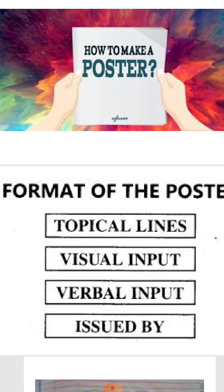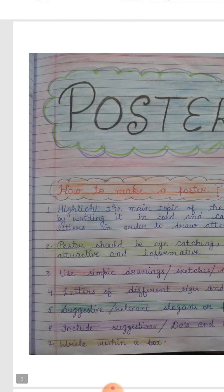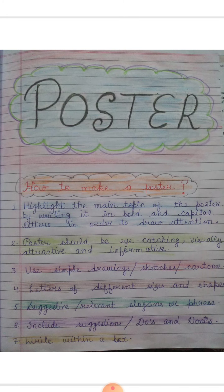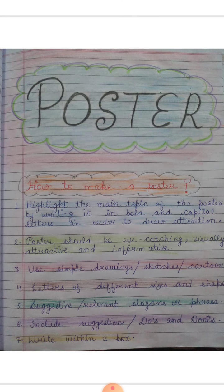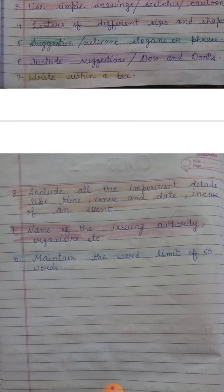Now some rules for writing a poster. Firstly, highlight the main topic by writing it in bold and capital letters to draw attention. The poster should be eye-catching, visually attractive, and informative. Use simple drawings, sketches, or cartoons, and letters of different sizes and shapes. Use suggestive or relevant slogans or phrases, and include suggestions such as do's and don'ts. Write all things within a box, and include all important details like time, venue, and date in case of any event.